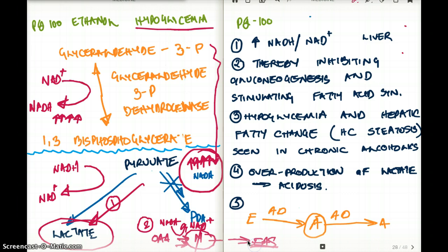Since it goes to fatty acid synthesis, more fatty acid is being formed. That's why we have more fatty acid change in the hepatocytes giving rise to hepatic steatosis in chronic alcoholics.